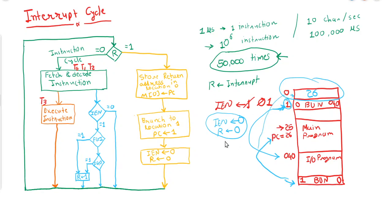While executing this return instruction, the interrupt enable flag is set back to 1. This is how the CPU efficiently manages input/output operations using the interrupt cycle — the CPU does not waste time checking the input flag and output flag repeatedly.